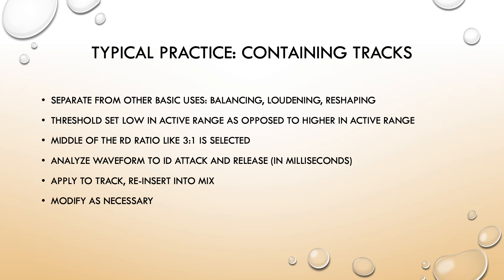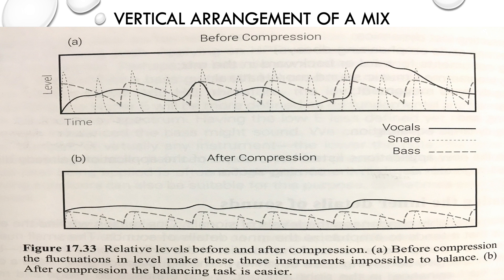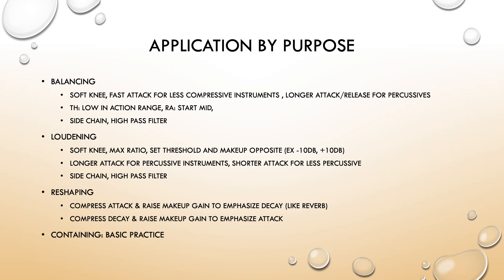In typical practice, you're containing your mix. For example, if you have vocal, snare, and bass that are jumbled together, you need to vertically arrange them. You can use a compressor to even out the vocals and boost their average level, and for the snare you even it out but don't use makeup gain to boost it — you just compress the peaks and let them stay low, making room for the vocals to ride on top.